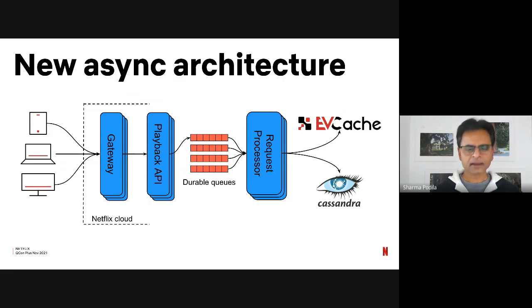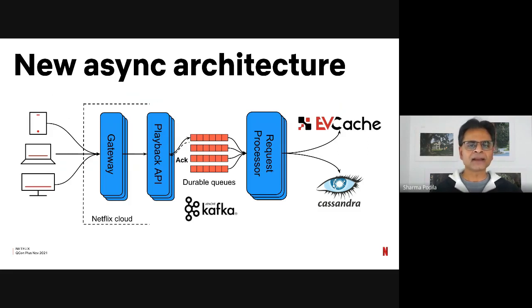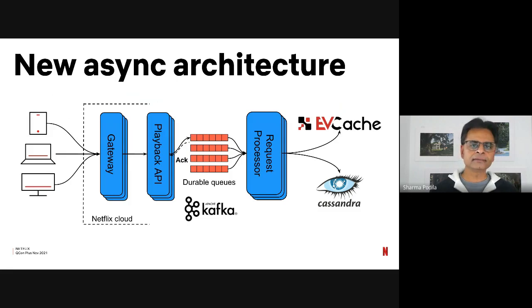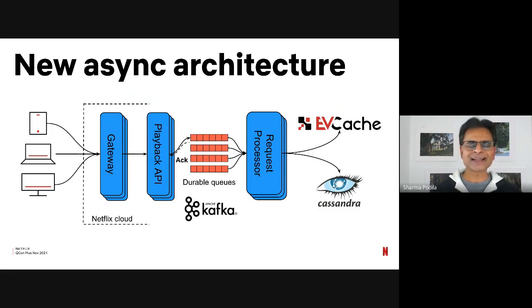It turns out Apache Kafka fits this use case pretty well. Kafka presents a log abstraction to which producers like playback API can append. Multiple consumers can then read from the Kafka logs at their own pace using offsets, for example. So this sounds simple — we introduced Apache Kafka between two of our processing layers. But we are operating at an approximate order of magnitude of 1 million events per second. At that scale, you start to hit a few challenges in asynchronous processing.